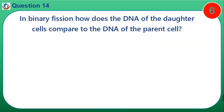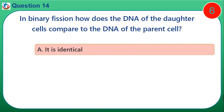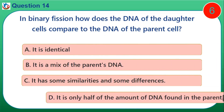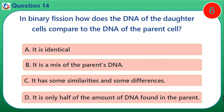Question 14. In binary fission, how does the DNA of the daughter cells compare to the DNA of the parent? A. It is identical. B. It is a mix of the parent's DNA. C. It has some similarities and some differences. D. It is only half the amount of DNA found in the parent.